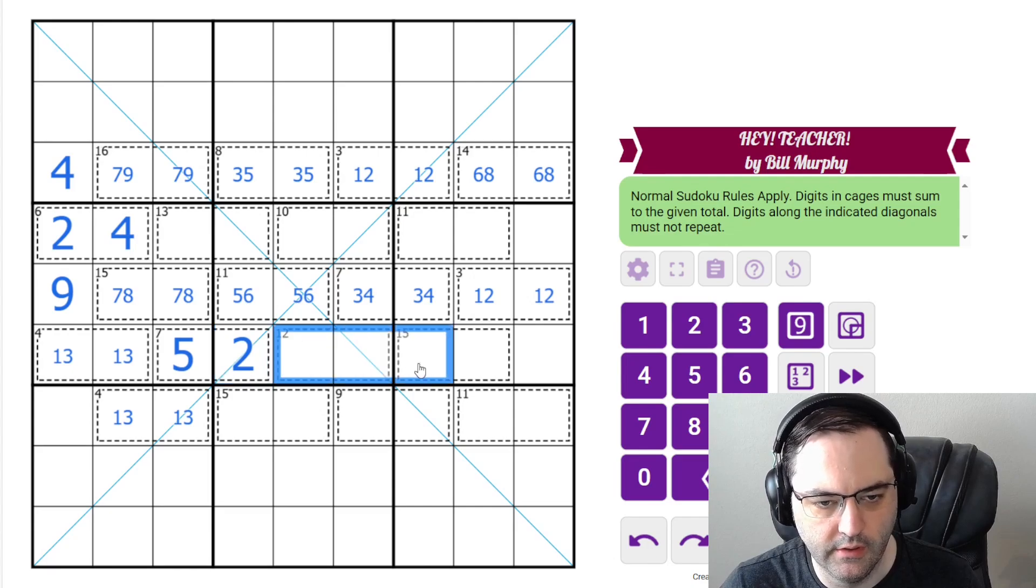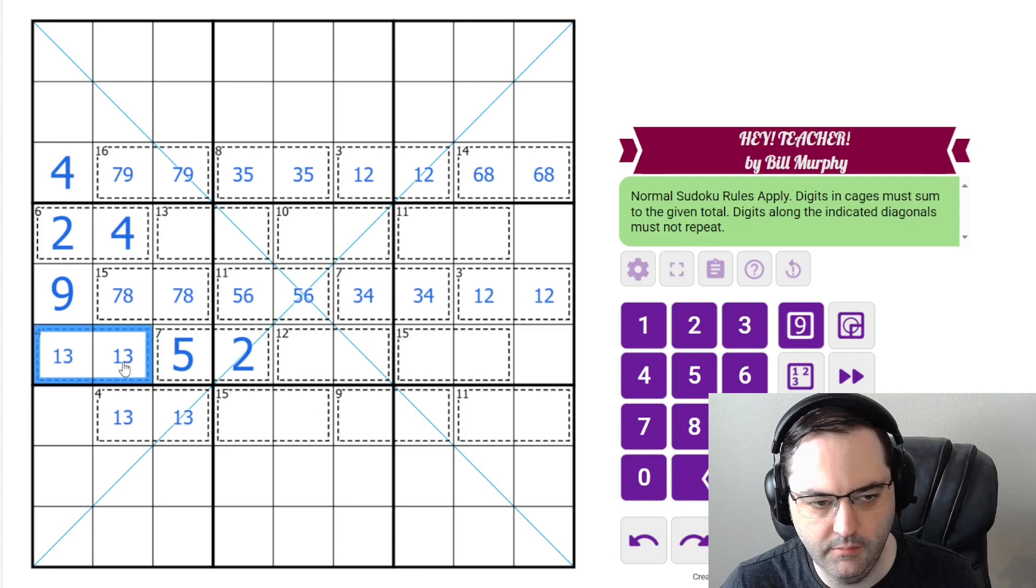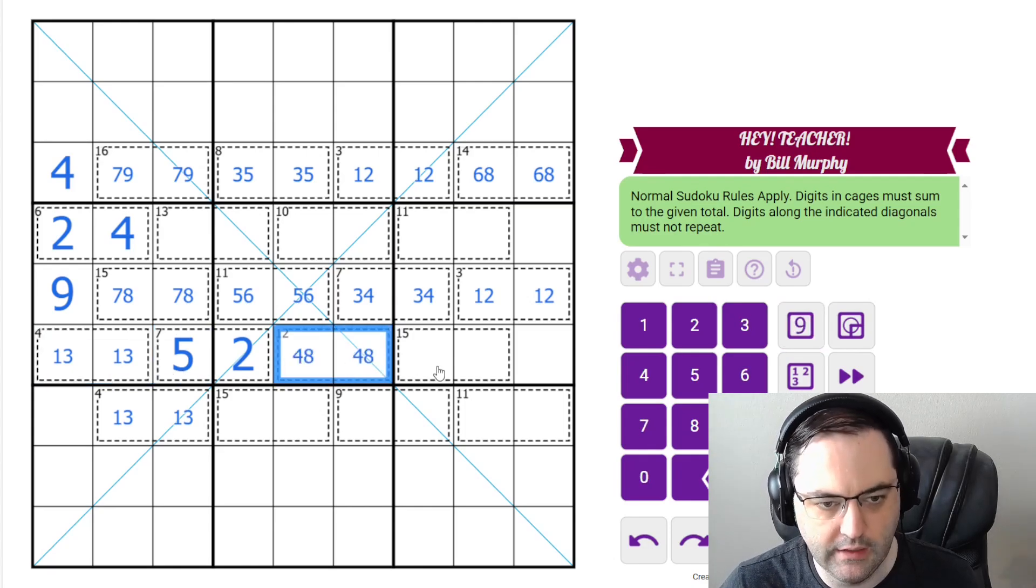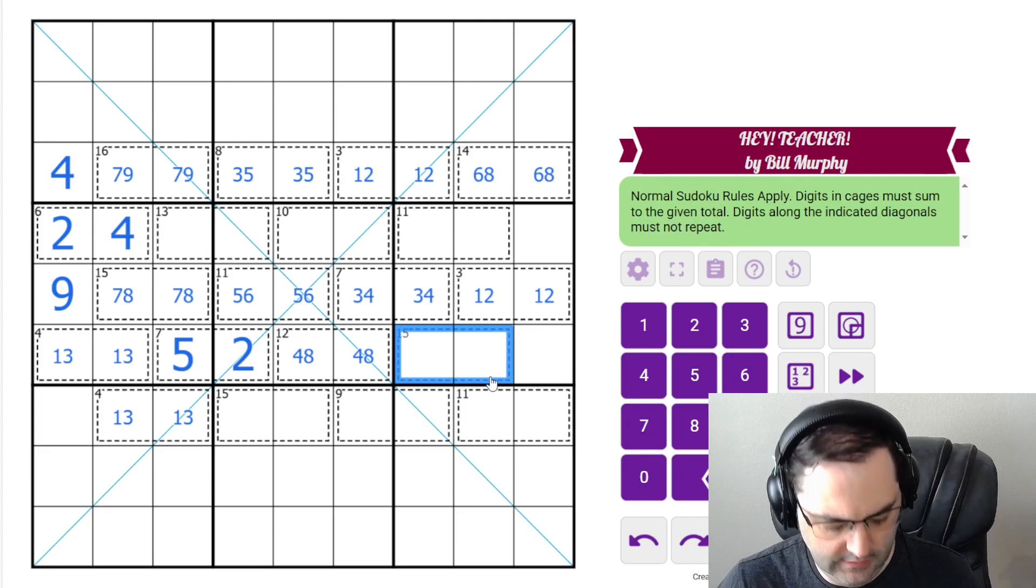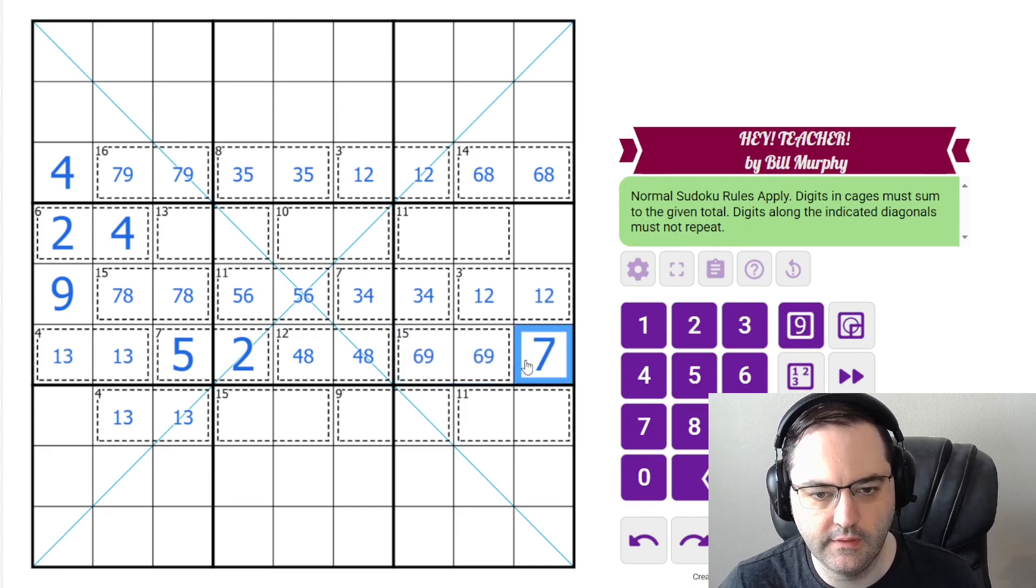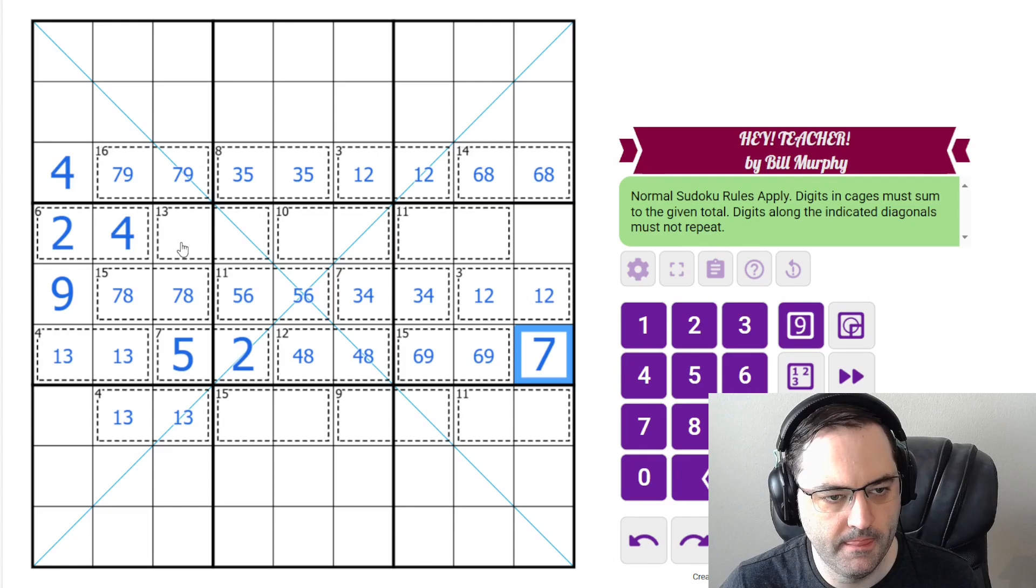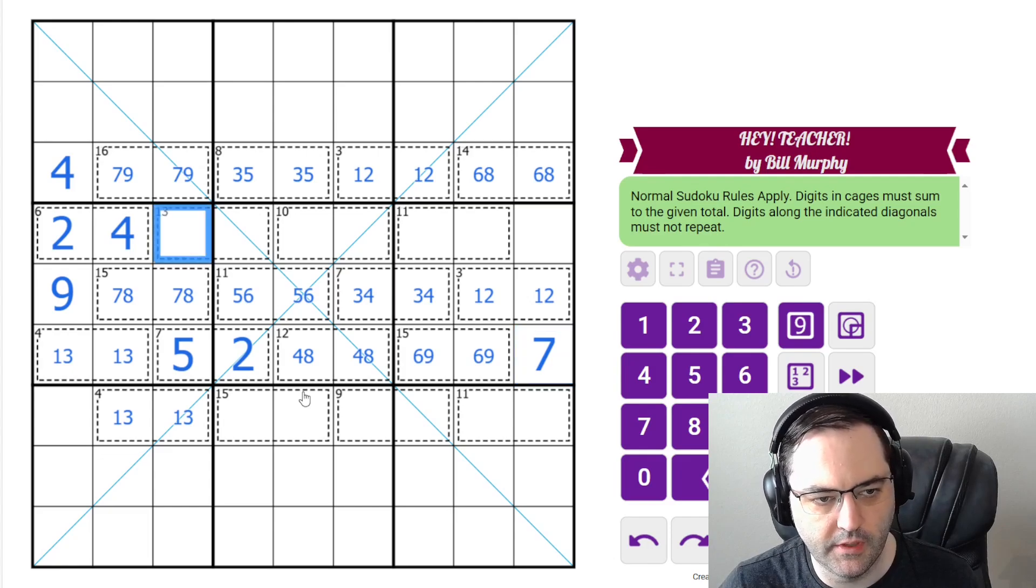I see there's a diagonal there. I'm going to come back to it. The 12 can't be 3, 9, can't be 5, 7. The only thing left is 4, 8. And now the 15 must be 6, 9, with a 7 left over.